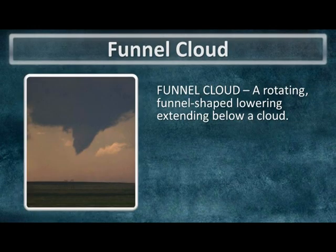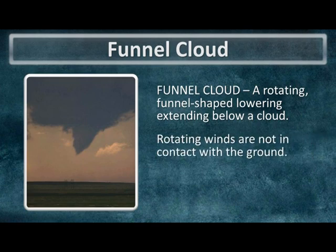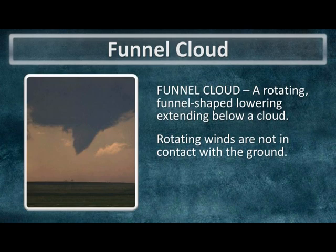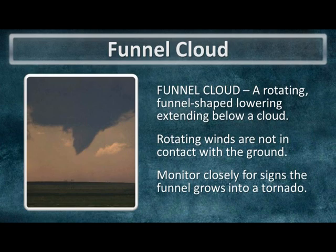Now the thing most people associate with a tornado is the funnel cloud itself. Yes, the funnel cloud is a part of the tornado but it is not the actual tornado itself. The funnel cloud is a rotating funnel-shape lowering extending below a cloud — an appendage extending usually from the base of the wall cloud — and it does have rotating winds, but they are not in contact with the ground. If you do see a funnel cloud associated with a thunderstorm, monitor it very closely, as it usually means a tornado is likely or imminent, but it does not always mean a tornado will happen.